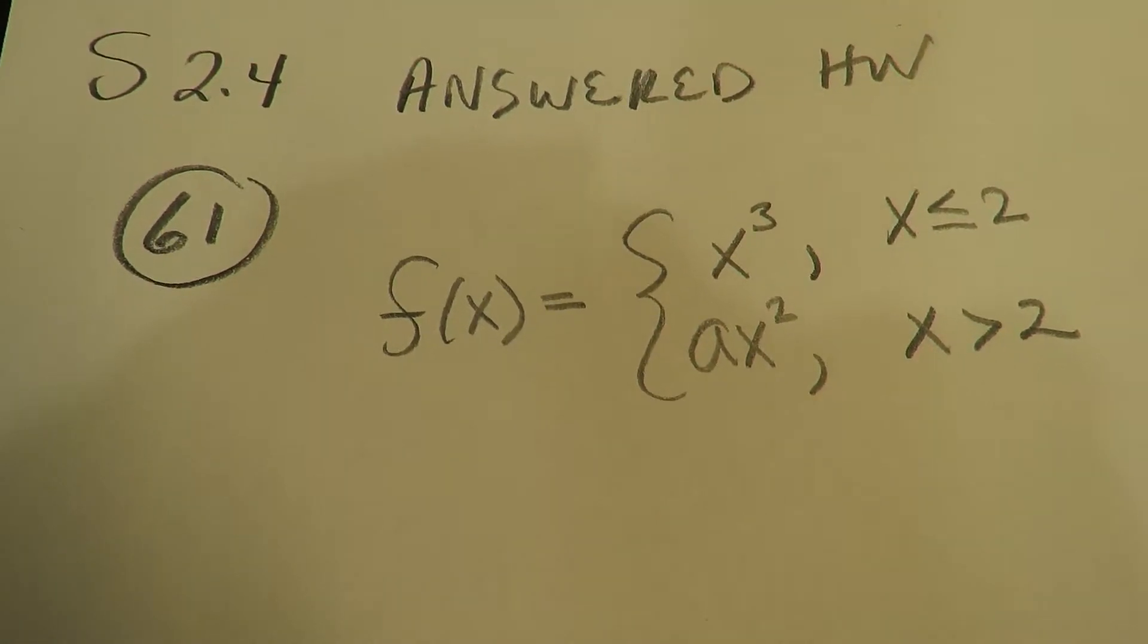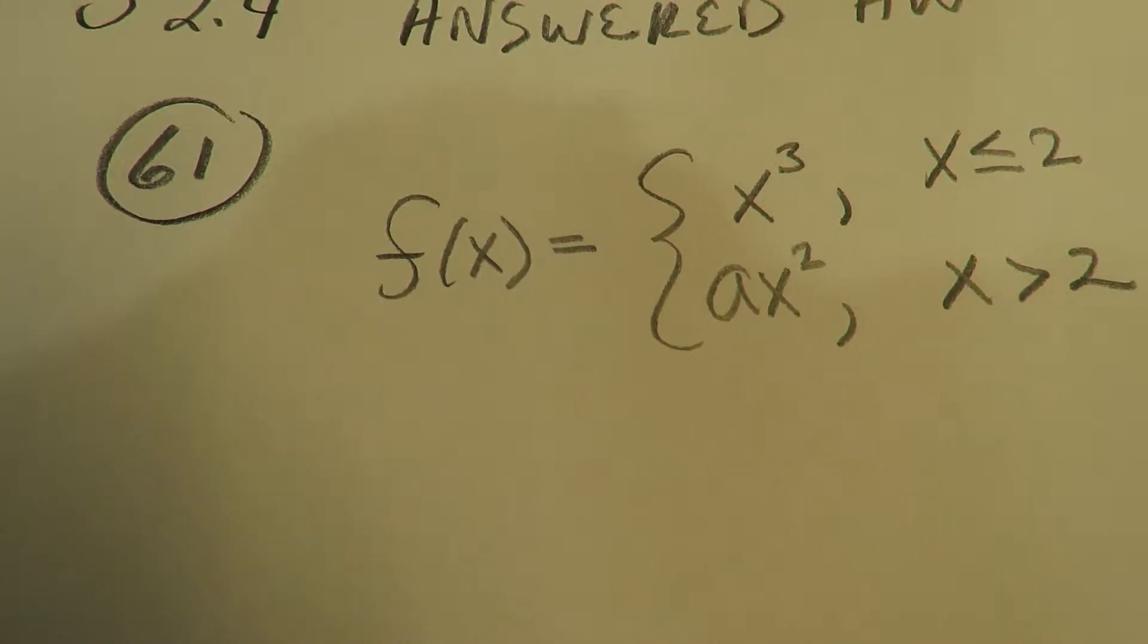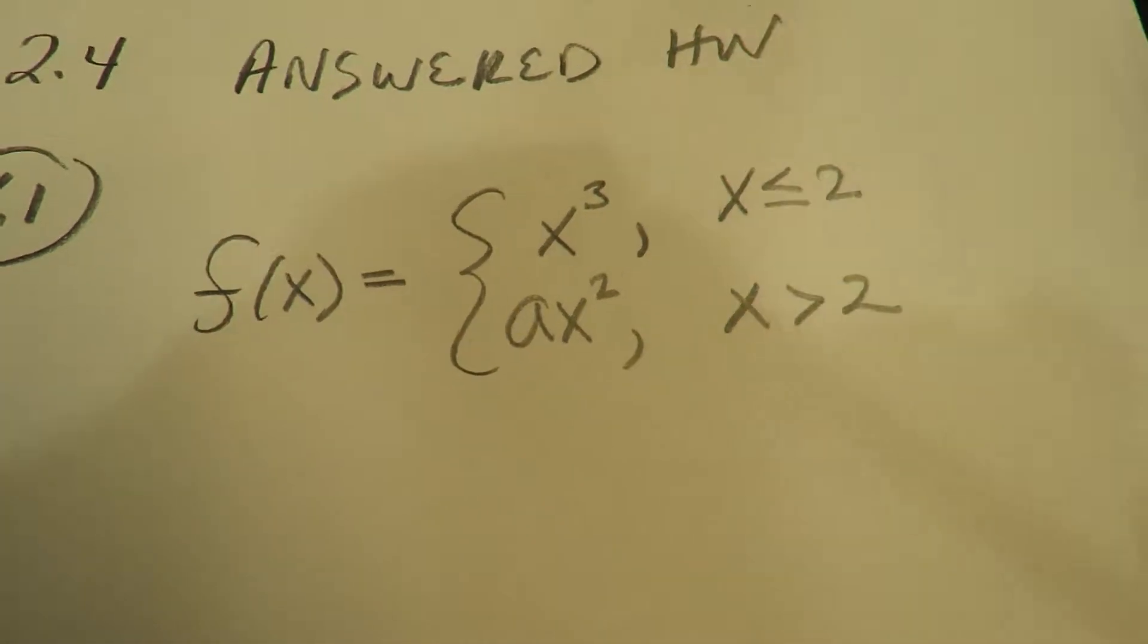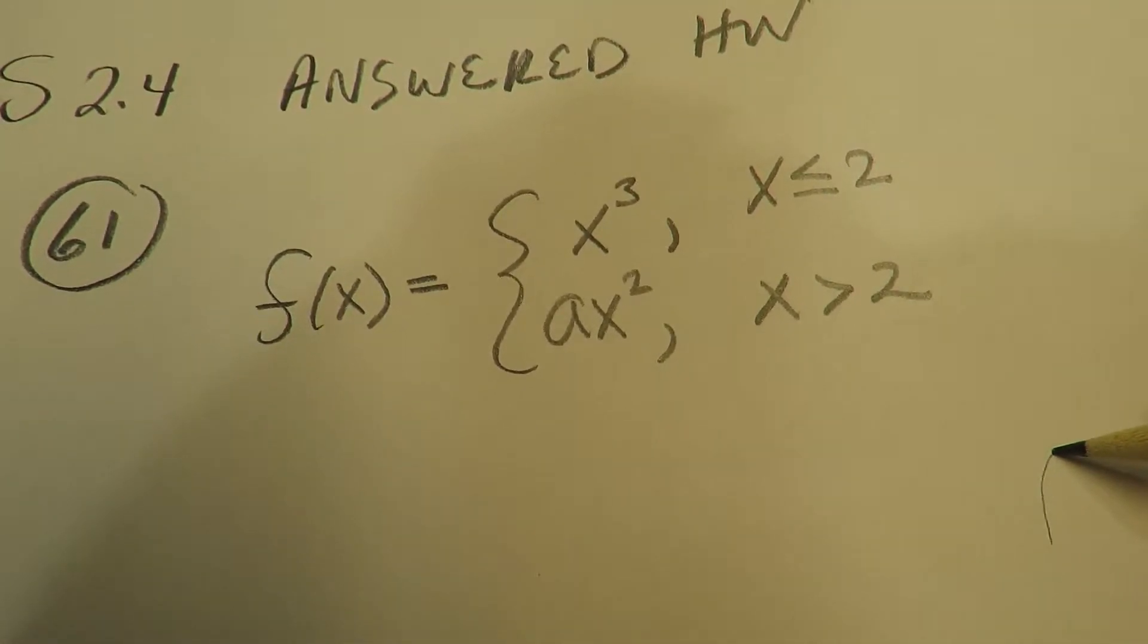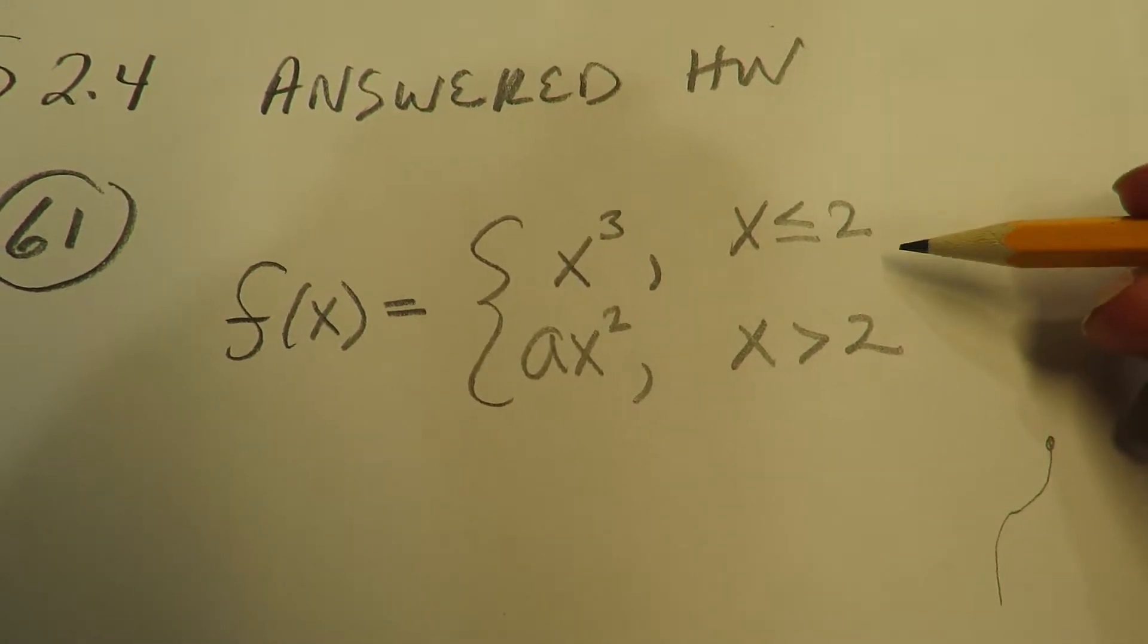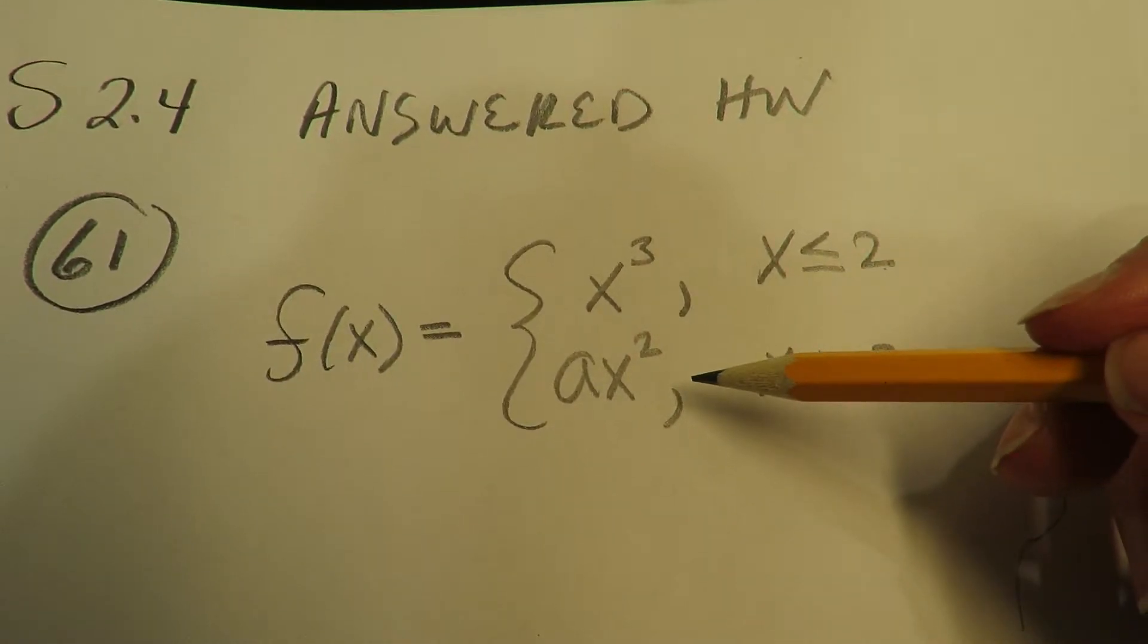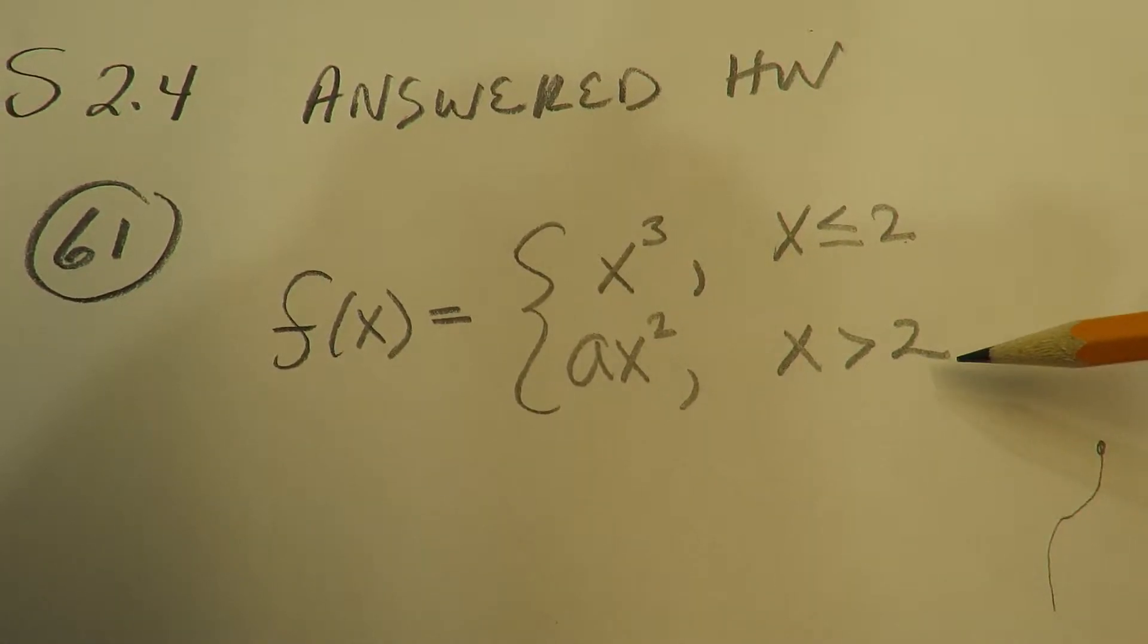Hi Calc! So for this system here you want to make it continuous. Right now what you have is a cube root function that is being cut at 2, and then you want to add on a parabola as you get greater than 2.